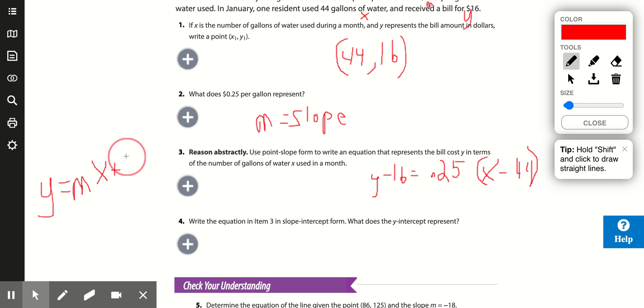Let's see if we can change this equation to slope-intercept form. Well, I want the y by itself, so that means I'm going to get rid of the minus 16 by adding it to both sides. I need to distribute first before I do that: 0.25x, and then 0.25 times 44, a fourth of 44, 44 divided by 4 is 11, so minus 11 plus 16. Minus 11 plus 16 is 5.